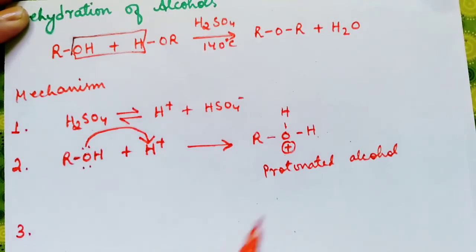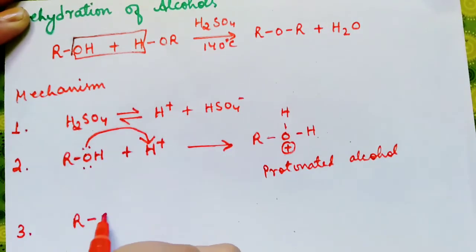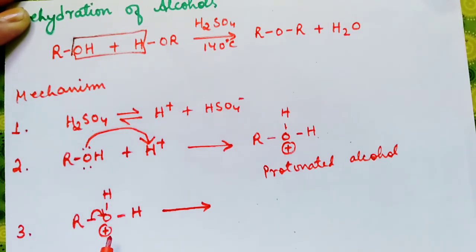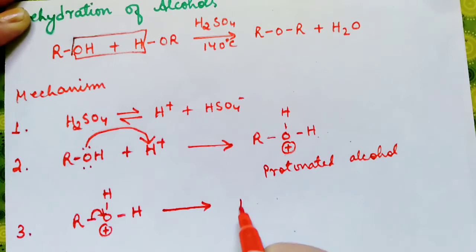In step three, we have the elimination of water molecule to form a stable carbonium ion. R-O-H-H plus. The electrons from this bond neutralize the positive charge here, and so we have elimination of water molecule. And finally, we have R plus which is a stable carbonium ion with H2O.